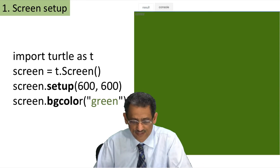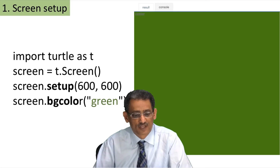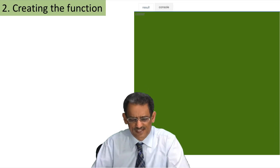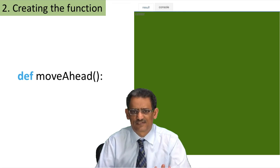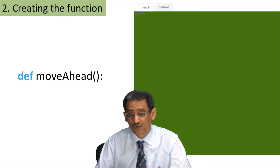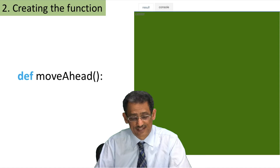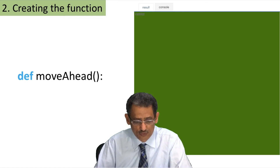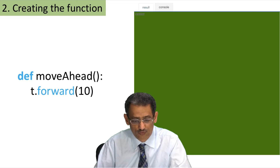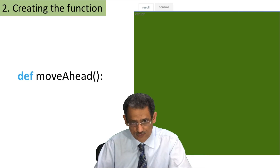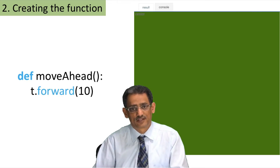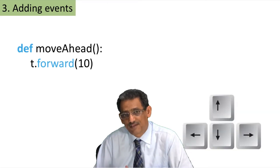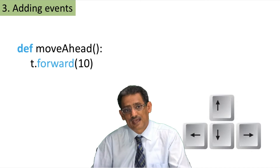After that you will get a green screen. The next step is creating the functions. The first function is a very simple one — it doesn't receive any parameters, it just does the action. We create a function called move_ahead, and the action it will do is move forward by 10 points. That's the function.